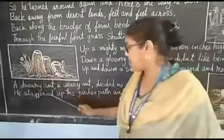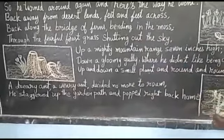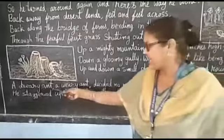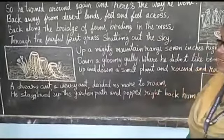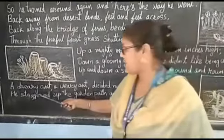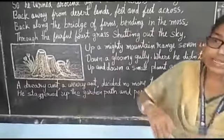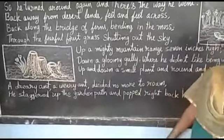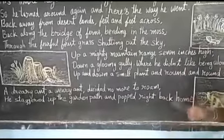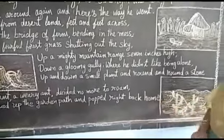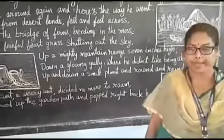Dreary and weary, he decided no more to roam. He staggered up the garden path and poked right back home. He was so tired and struggling — staggering means shaking like a drunkard walks, because his legs had no more strength. In the garden he moved along and then he rushed at flying speed to somehow reach his home.